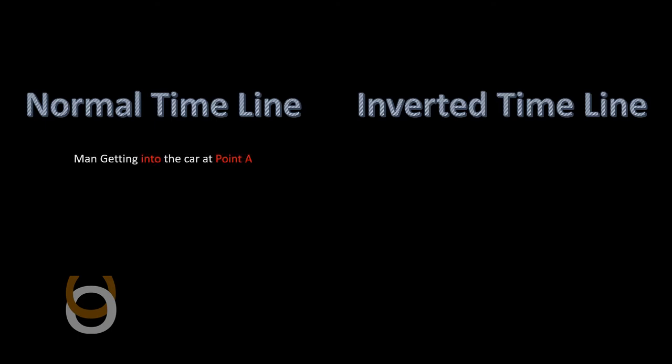First of all, we will look into the normal timeline. The activity starts when a man gets into a car at point A. Then he drives from point A to point B. Finally, he gets down at point B.